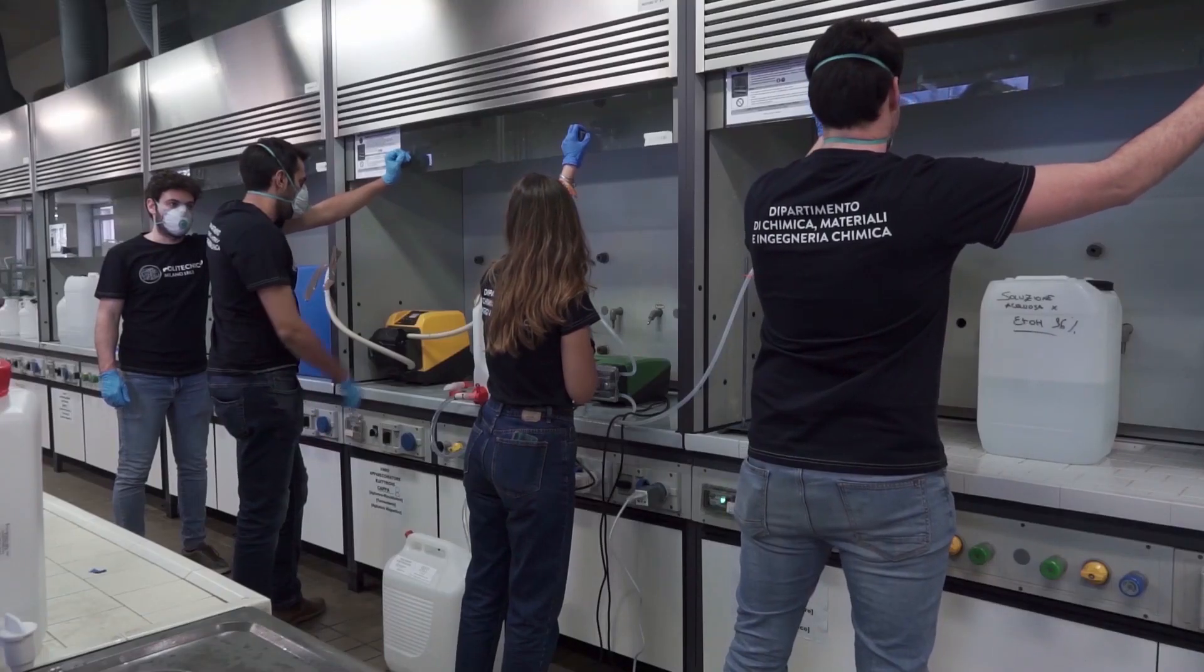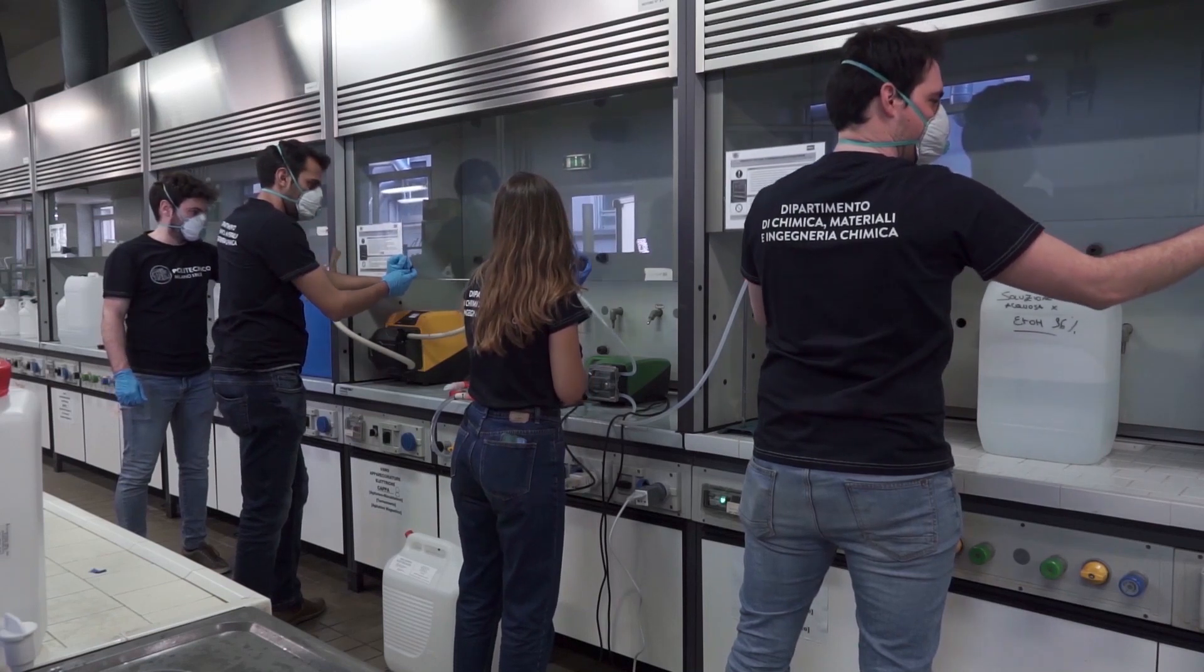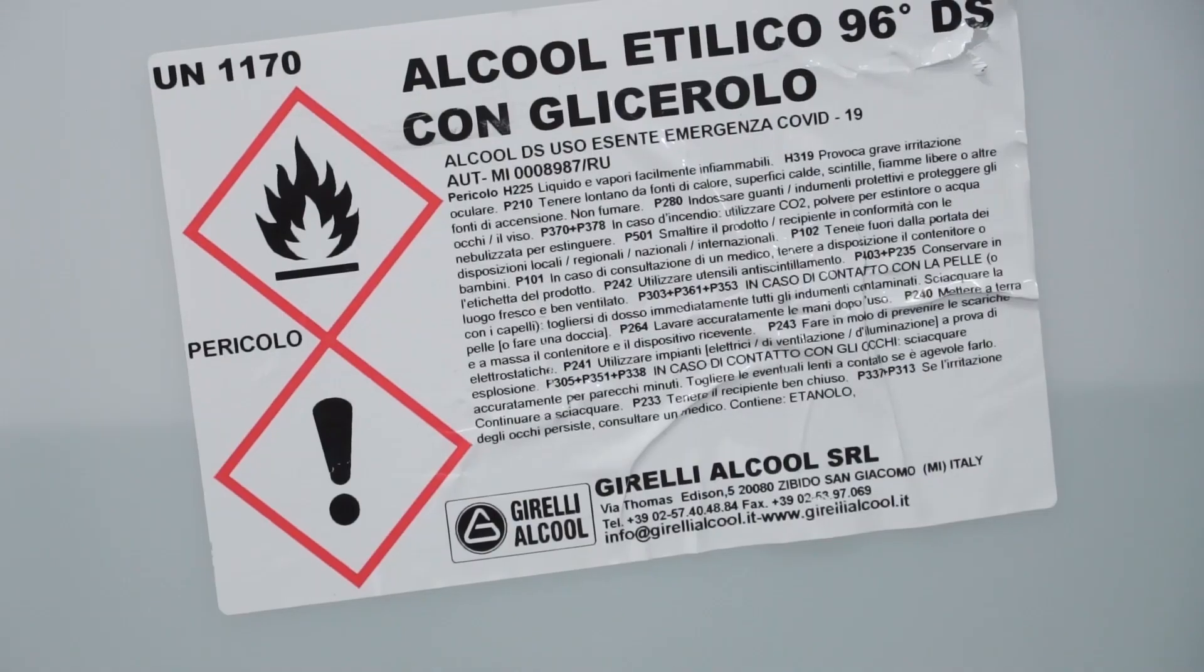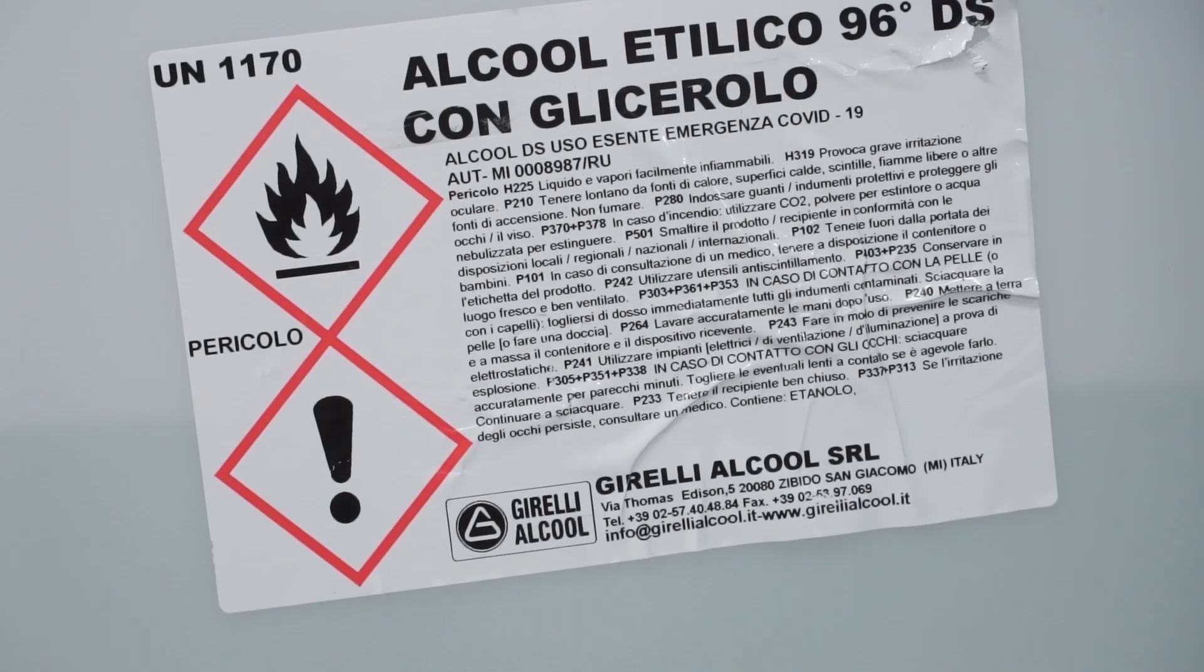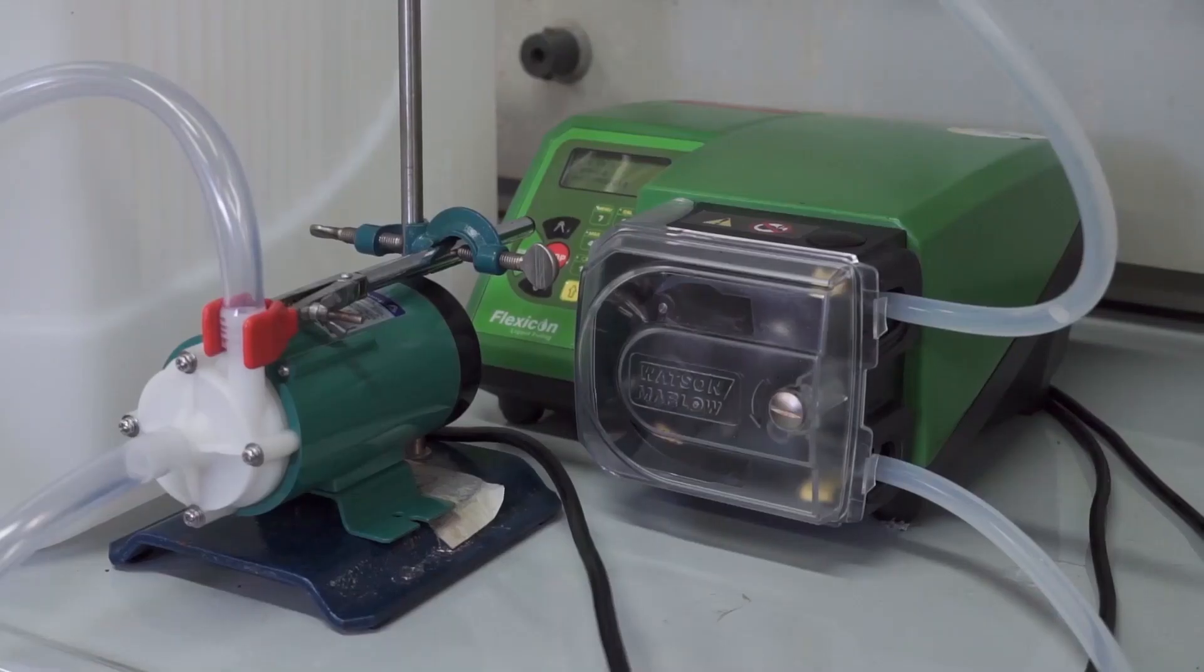To work safely, all the instruments described must be placed under a chemical fume hood or outdoors in a well-ventilated environment. Particular attention should also be paid to the explosiveness of alcohol vapors. For this reason, we recommend the use of peristaltic pumps in order to avoid direct contact of the alcohol vapors with electrical sources and moving mechanical parts.